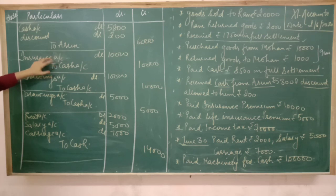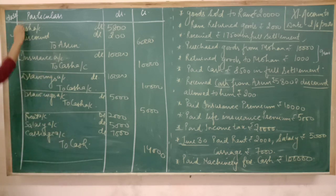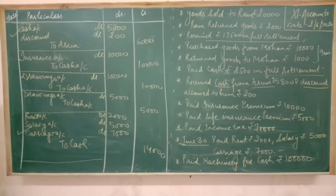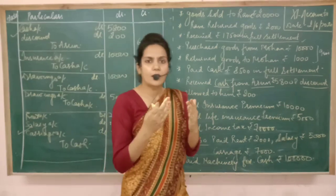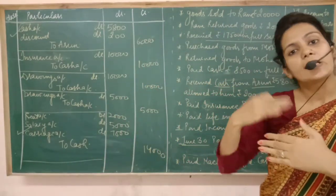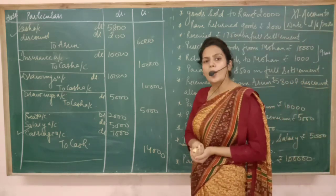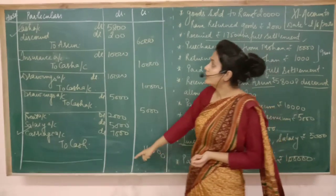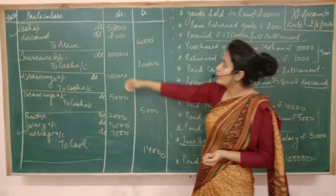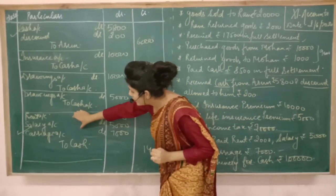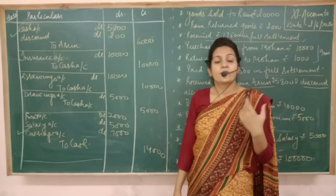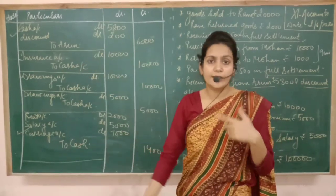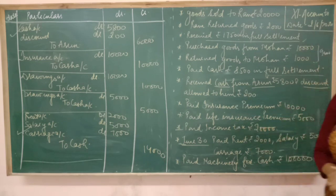Comparing entries: in simple entries, two accounts are affected — one debit, one credit. But in this combined entry, three accounts are debited and one account is credited. When more than one account is debited or more than one account is credited in an entry, we call such entries compound entries. Simple entries have only one debit and one credit. If three accounts are debited and one is credited, or one is debited and two or three are credited, it is a compound entry. The concept of compound entries should now be clear.